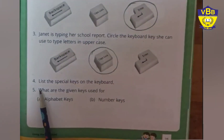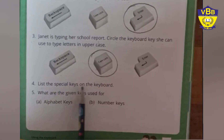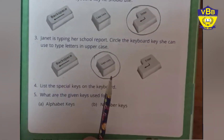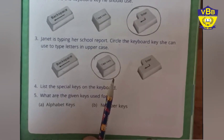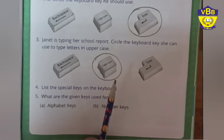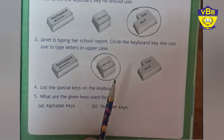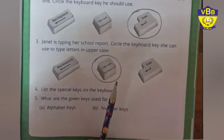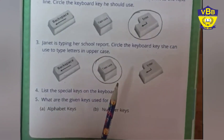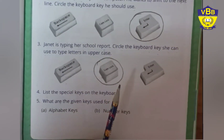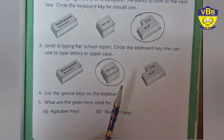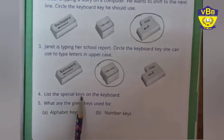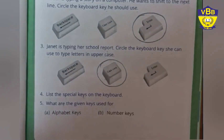Now let's move on to question number 4: List the special keys on the keyboard. So tell me what are the special keys? Let's recap it first. What are special keys? Space bar. Second, backspace. Third, enter. And what is the last one? Caps lock. Correct. So we have to list the special keys on the keyboard.